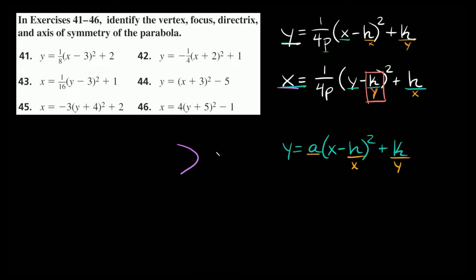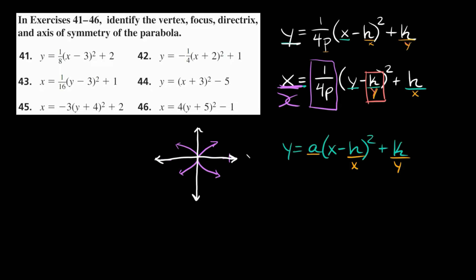A way to remember the x= case: some people draw their x's like an arrow pointing left or right. For x equals, the number in front tells us if it opens left or right — if it's positive it opens to the right, and if it's negative it opens to the left. This has to do with the graph: positive numbers on the x-axis are to the right, negative numbers are to the left. On the y-axis, positive numbers are up and negative numbers are down. So if your parabola opens toward the positive direction, you have a positive number in front, and vice versa.